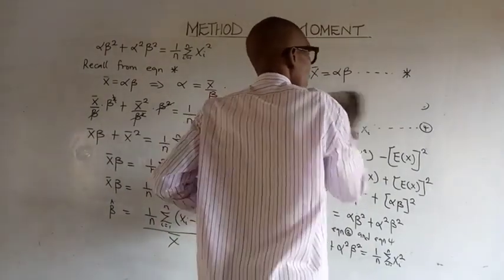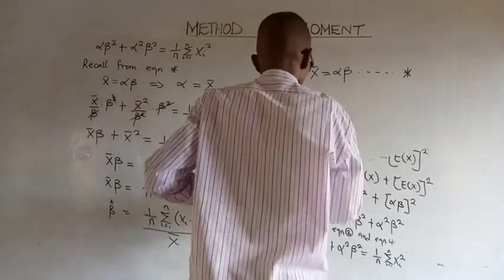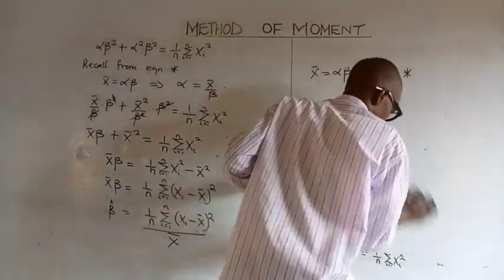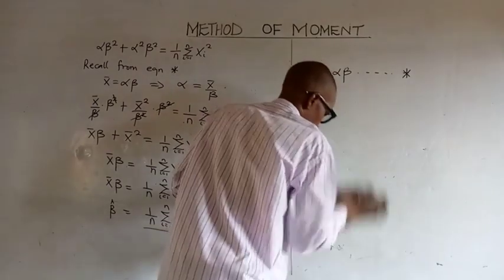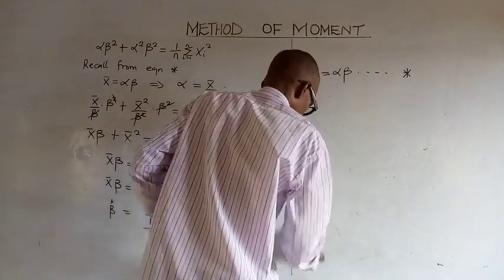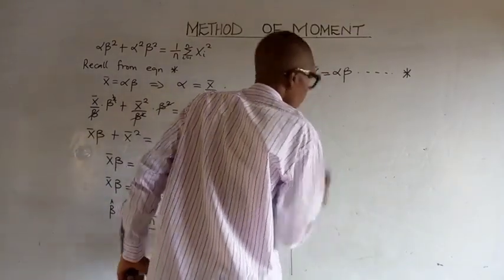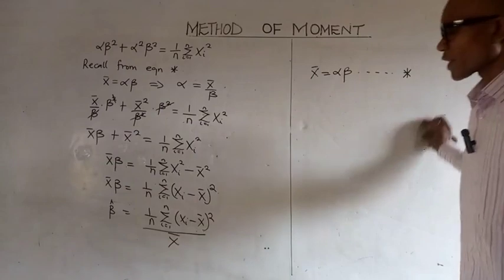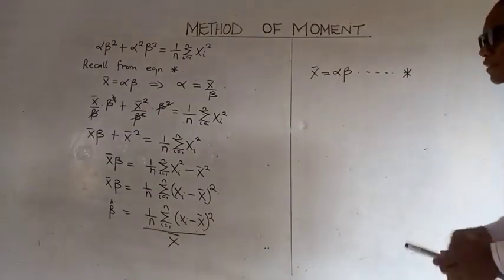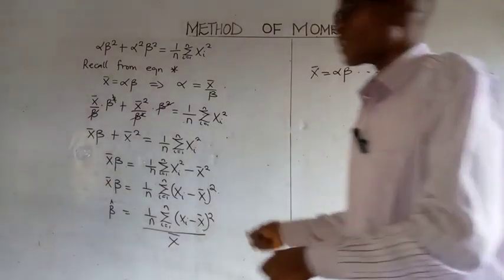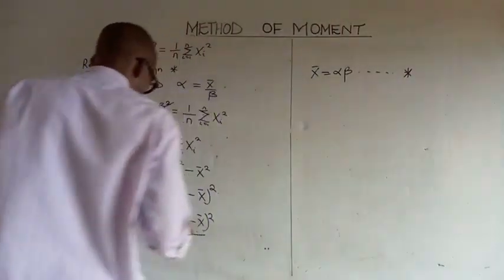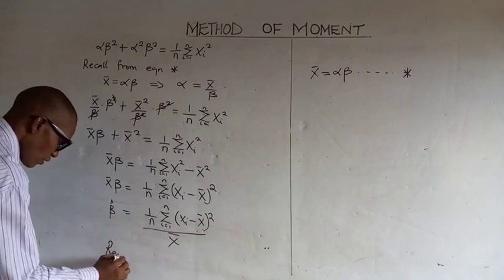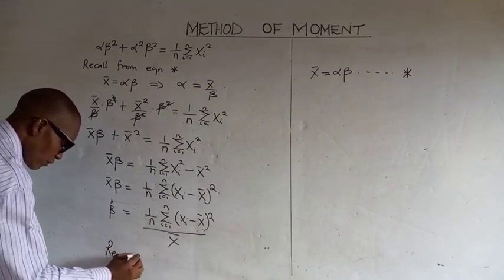To obtain the estimate for alpha, we use a different approach. From equation star, x bar is equal to alpha beta, which implies that beta is equal to x bar over alpha. So our beta estimate will be x bar over alpha.